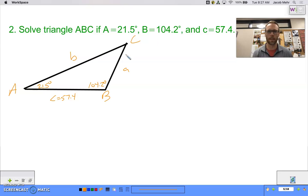So what should we find first? I think that missing angle is what we should find first. So I'm going to take 180 minus 21.5 minus 104.2, which equals 54.3 degrees.